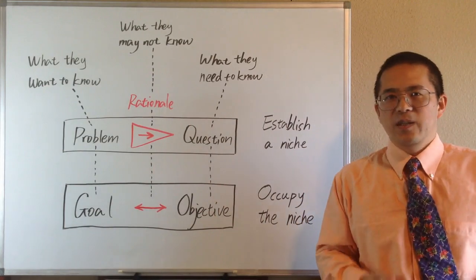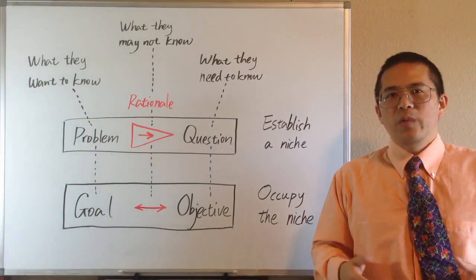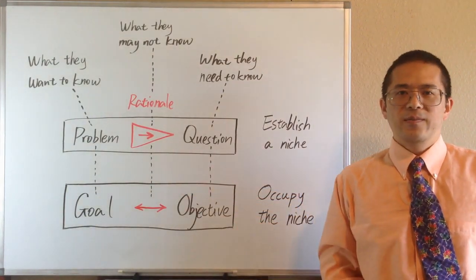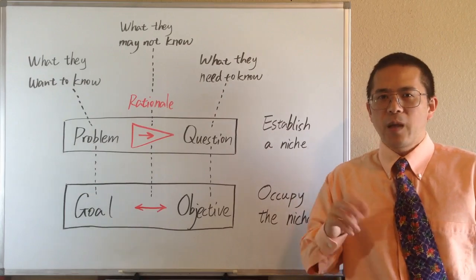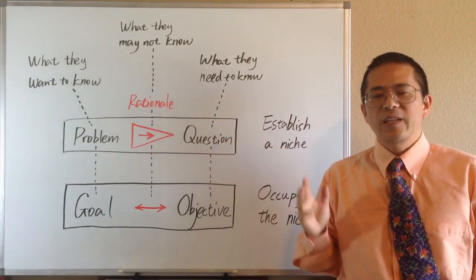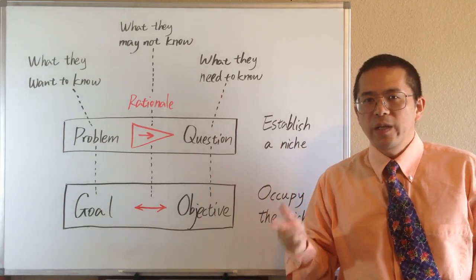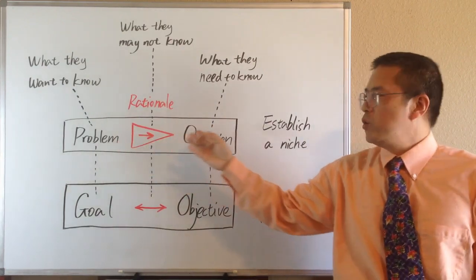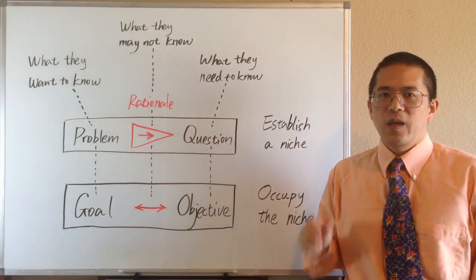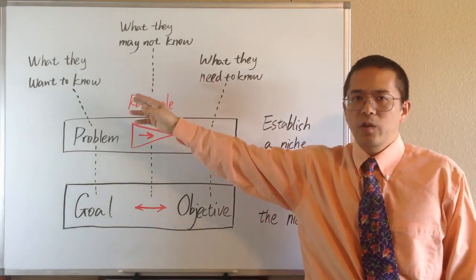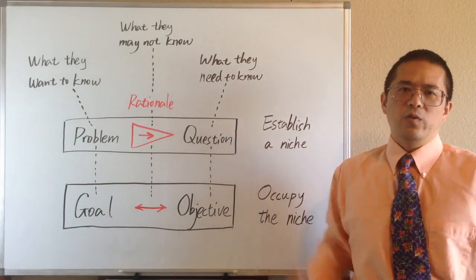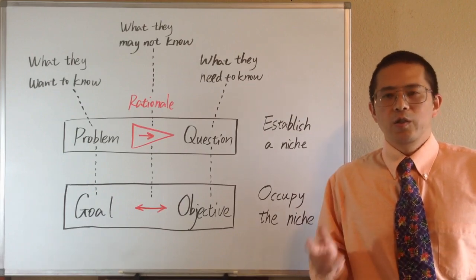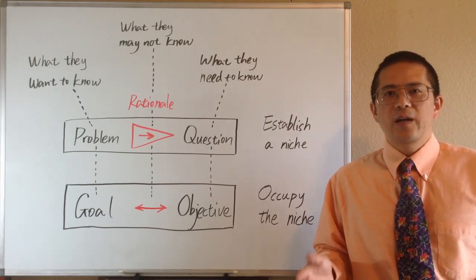In order to make that connection, in the first few sentences we'd better meet the reader at where they are. We may provide readers something they want to know, and start with something they may already agree. The basic principle is to move from a general problem to specific research questions, and to move from what they want to know to what we think they need to know.